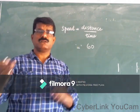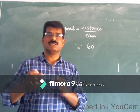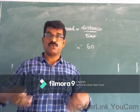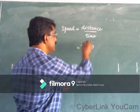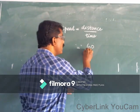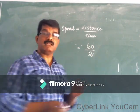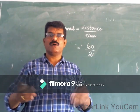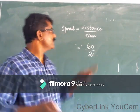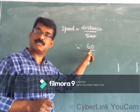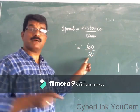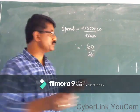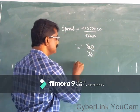Say for example, because of a traffic block, you have taken more time. Say for example, you have taken two hours to complete 60 km. So what is your speed? The distance you covered is 60 km and the time taken by you is 2 hours. Therefore, 60 divided by 2 equals 30.